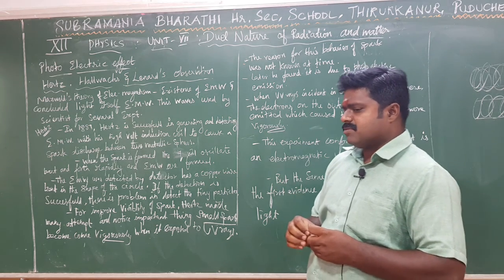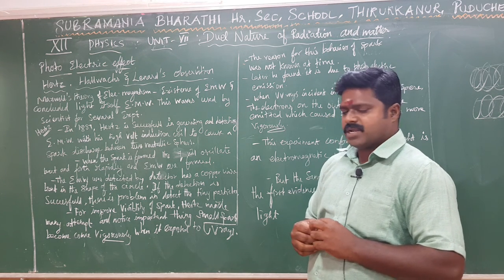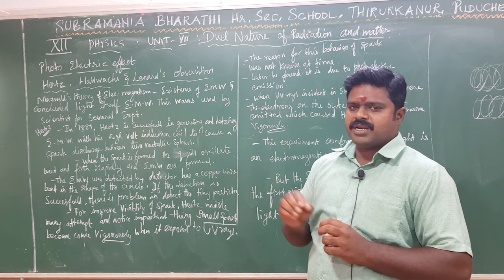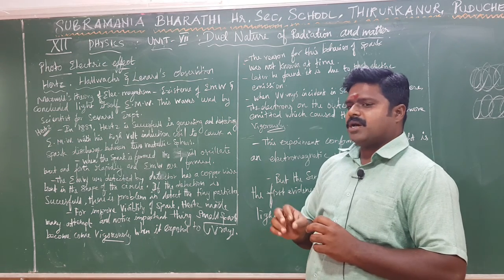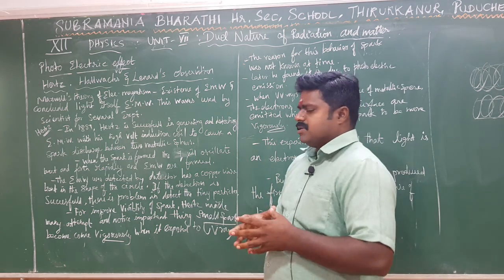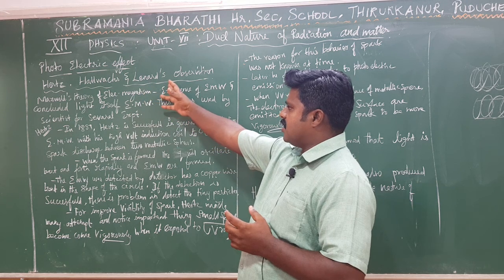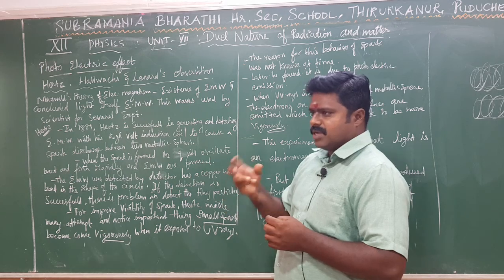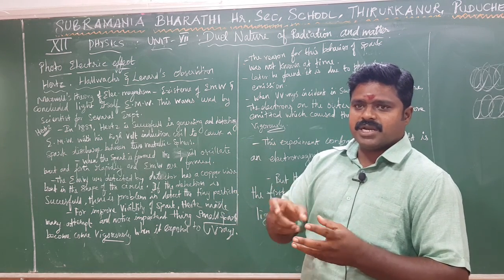Now we have experimented in this class, especially the photoelectric effect. Due to the light ray, we can produce electricity. Experimentally, scientists did it — first of all, Hertz, Hallwachs, and Lenard. Using light rays, we can produce electricity. That means ultraviolet rays cause electrons to generate electricity.